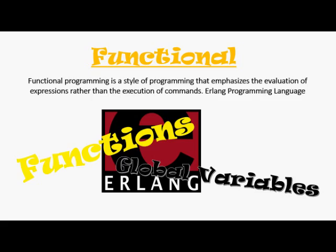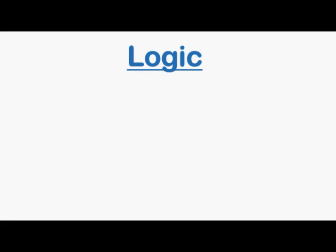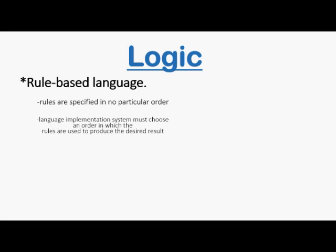The next category is logic programming. A logic programming language is an example of a rule-based language. In an imperative language, an algorithm is specified in great detail and the specific order of execution of the instructions or statements must be included. In a rule-based or logic programming language, rules are specified in no particular order, unlike in the imperative where rules are specified in a particular order.